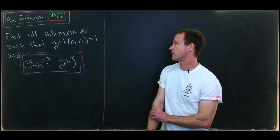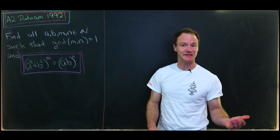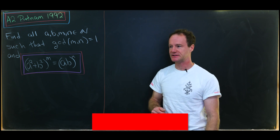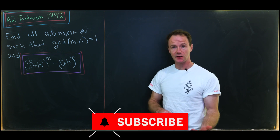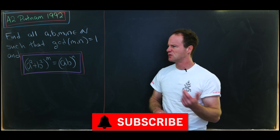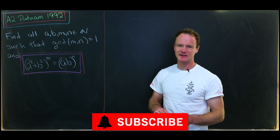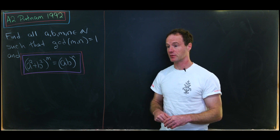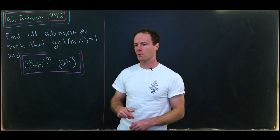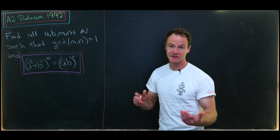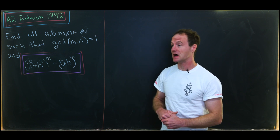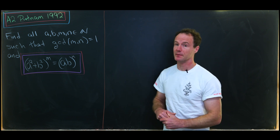Today I've got a nice problem from the 1992 Putnam. This is problem A2 and it's got a cool little number theory twist to it, which I think is nice because Putnam problems don't often have number theory on them. That's usually reserved for high school level problems, although from time to time they do show up on the Putnam.